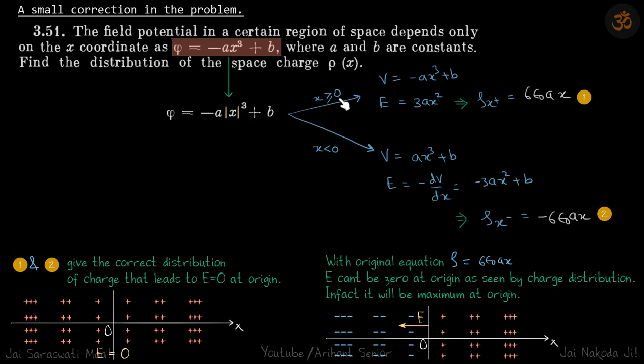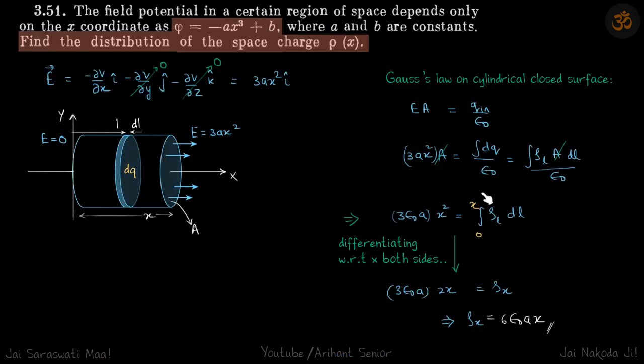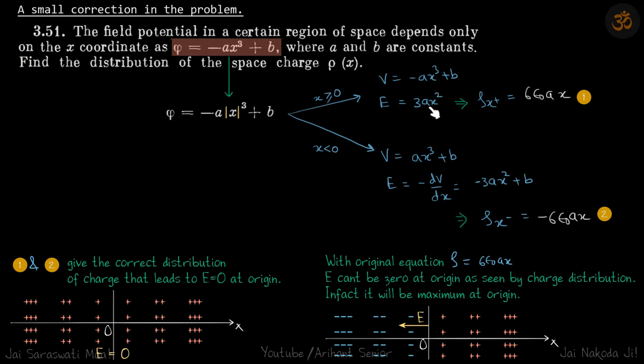So for x > 0, my potential is still the same as what we did there, right? So potential is still this and the field will still be this.